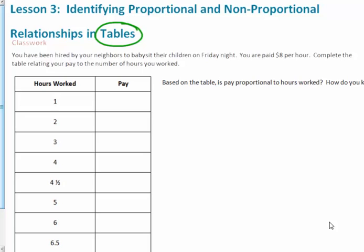Starting with this example here, you have been hired by your neighbors to babysit their children on Friday night. You are paid $8 per hour. That's a rate - $8 per hour. Every hour you babysit you get $8. So one hour gives you $8. Complete the table by relating your pay to the number of hours. Two hours, so 2 times 8 would give me 16. 3 times 8 would give me 24. 4 times 8 would give me 32.